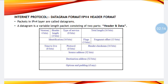Protocol field indicates whether the packet can be sent for TCP protocol or UDP protocol. Then we have header checksum, which is used for error detection and correction. Then source address — bits allocated for it are 32 bits, which contains the sender's address. Destination address contains the receiver's address.